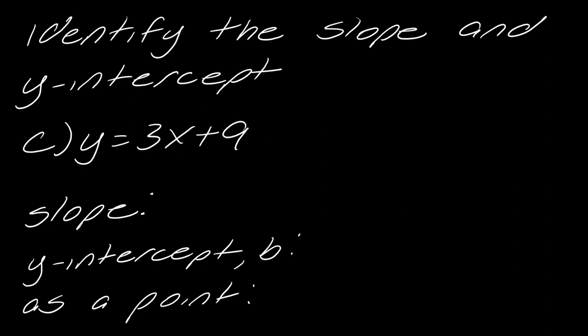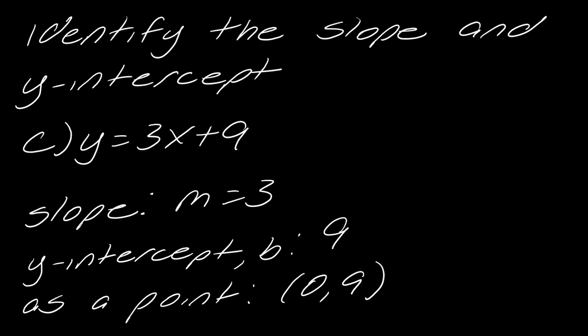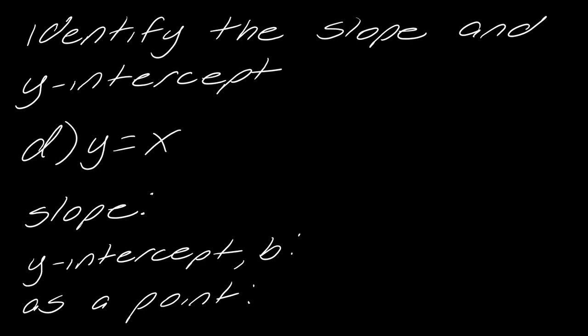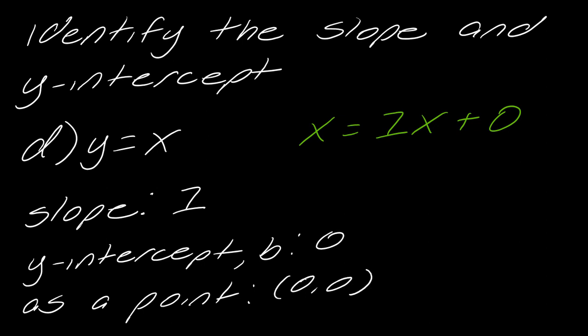Pause the video and think about the next one, then hit play when you're ready. The slope here is three and the y-intercept is nine, giving the point zero, nine. For the trickier last one — when you just see x, there's an invisible one in front, so the slope is one. There's no b term, which means b equals zero, making the y-intercept just the origin, zero, zero.